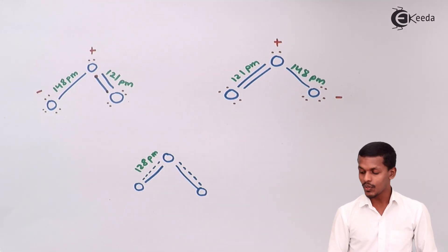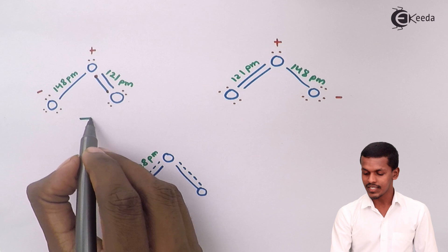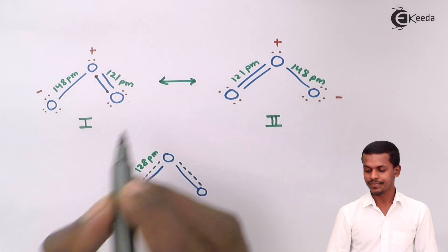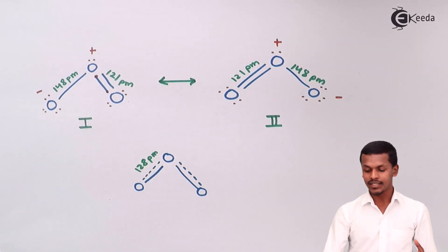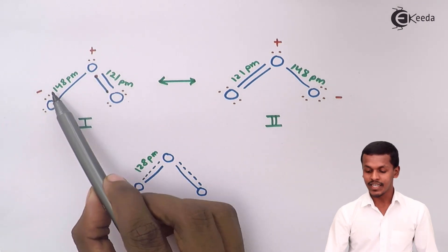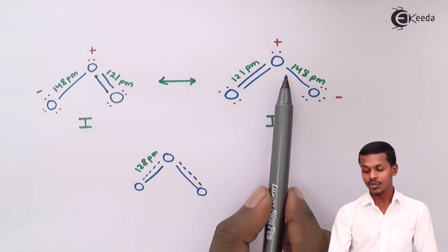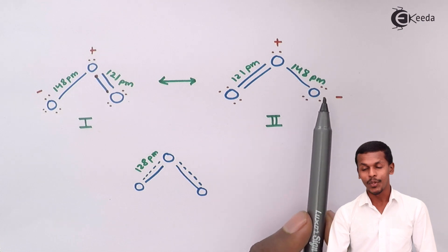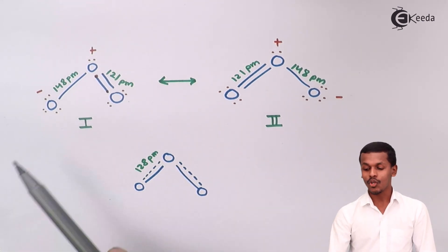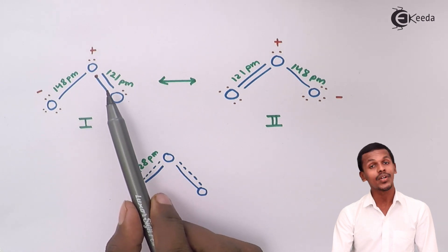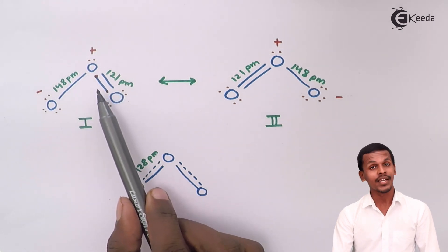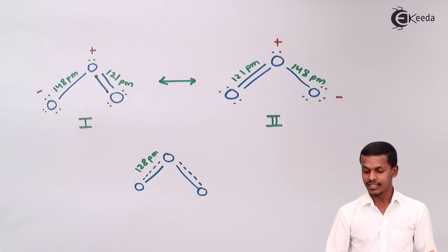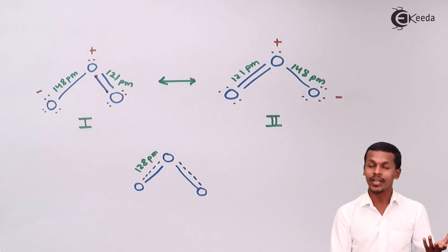These are the two structures — structure one and structure two — and both are similar to each other. The distance between the oxygen–oxygen single bond is found to be 148 picometres, and the distance between the oxygen–oxygen double bond is 121 picometres. This is what we studied in bond parameters.